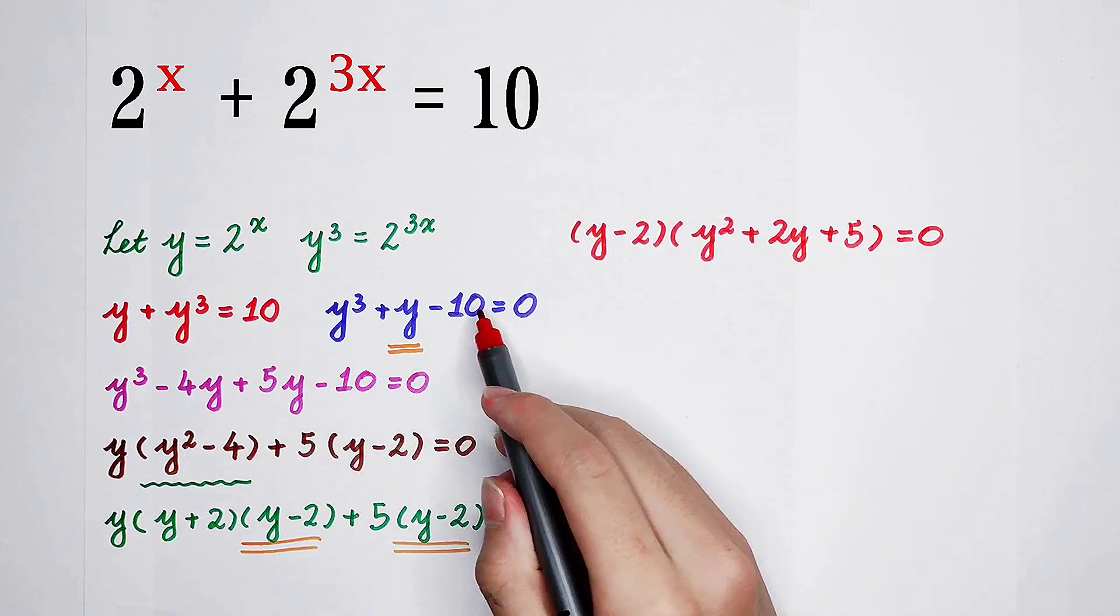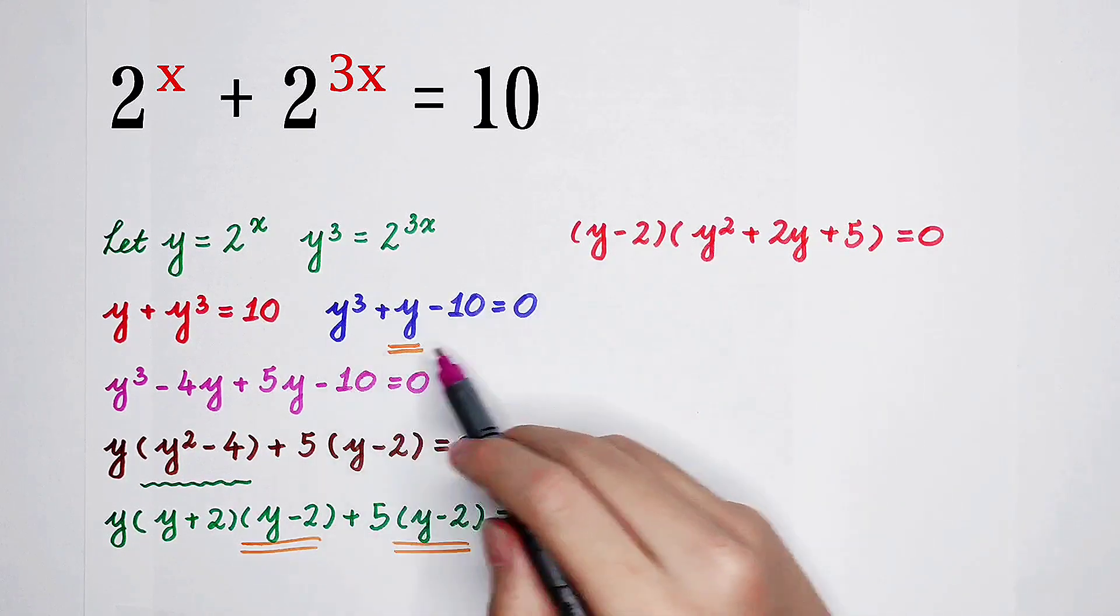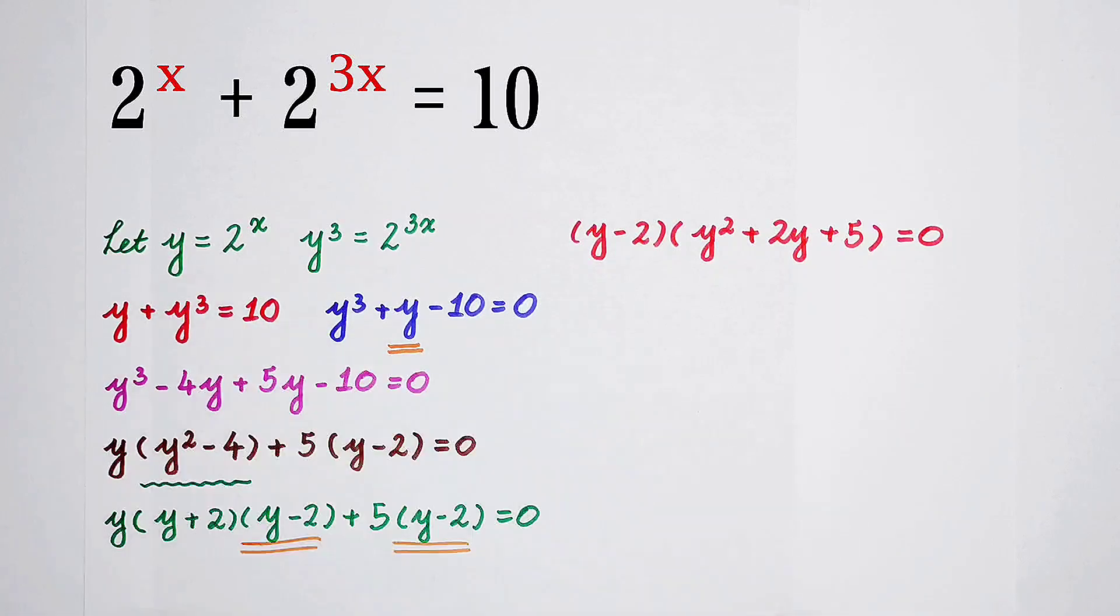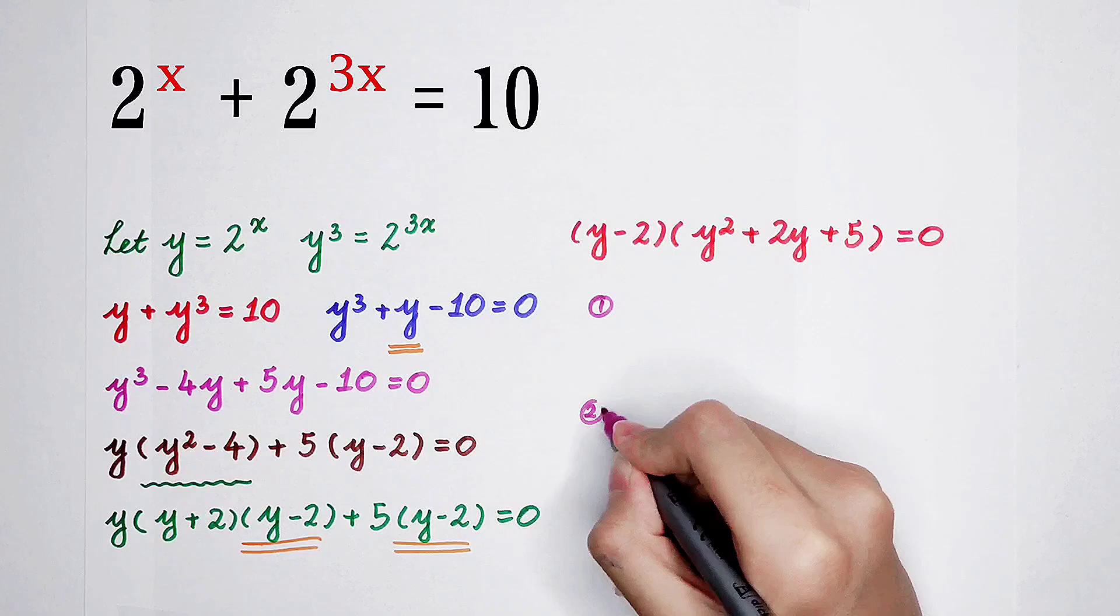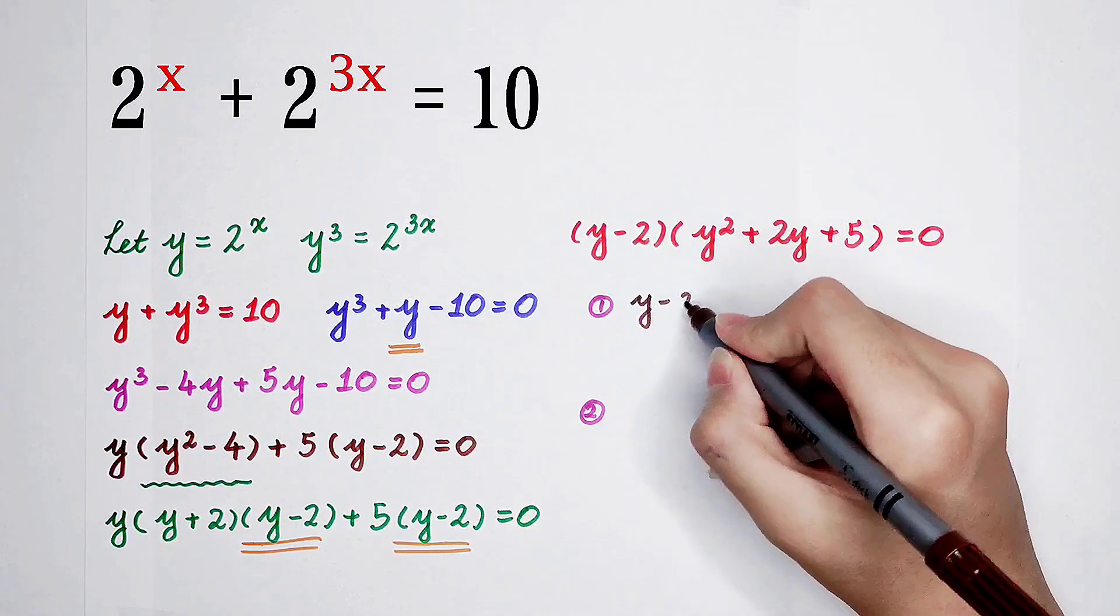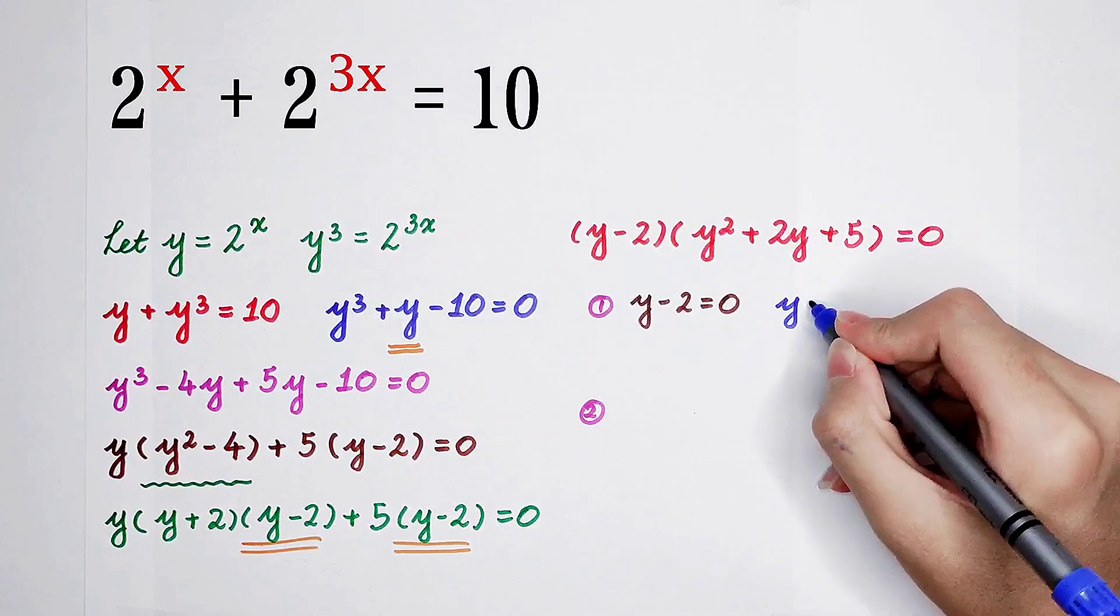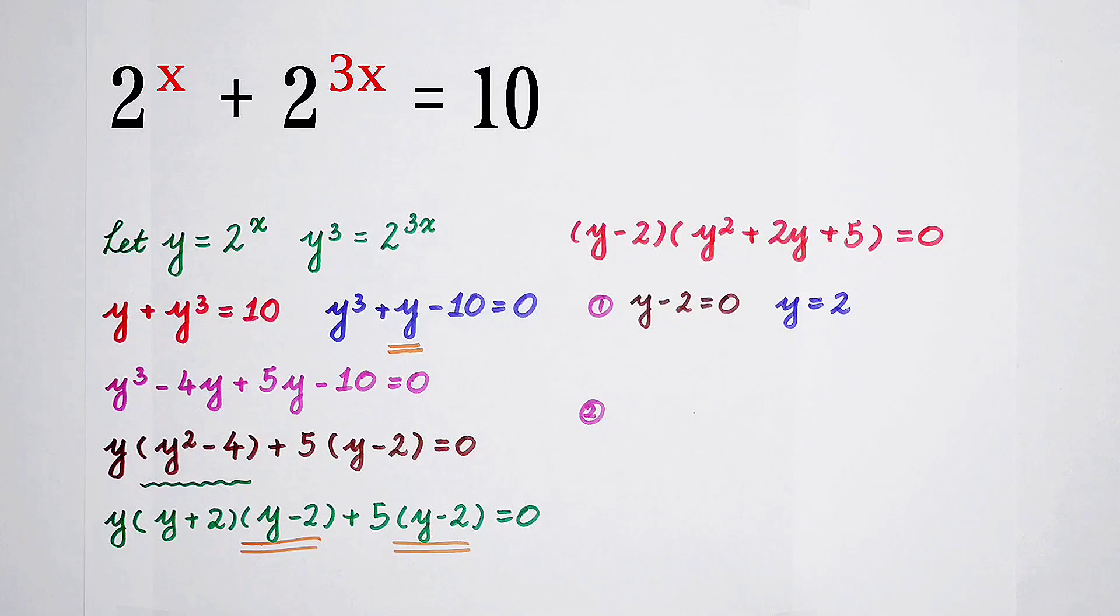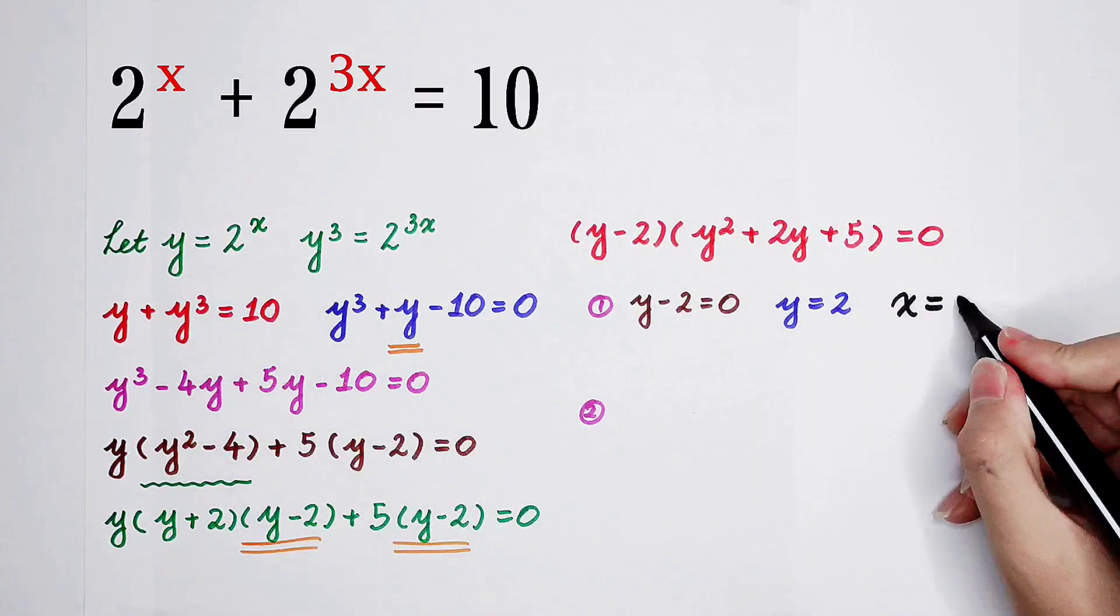So this equation is factored. Now we just solve the y from this equation, and then we can solve the value of x. There are two cases. For the first case, y minus 2 equals 0, so y is 2. And we can get the value of x: 2 to the power x equals 2, so x is 1.